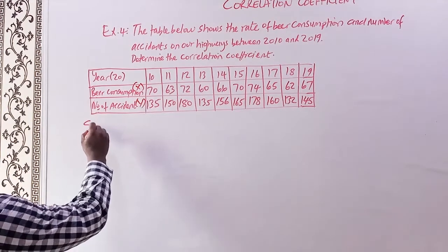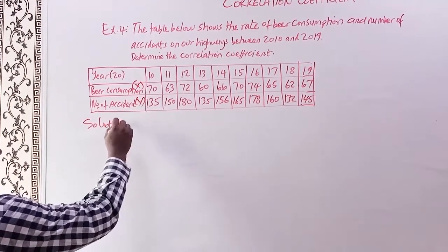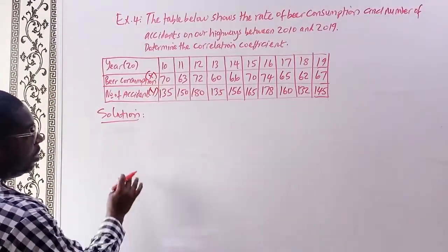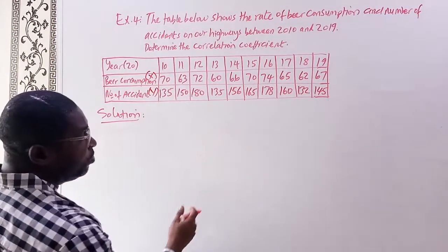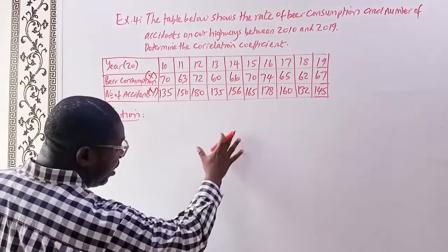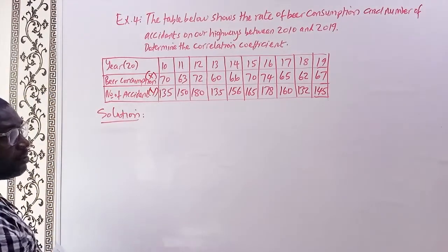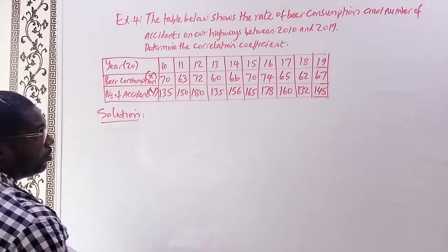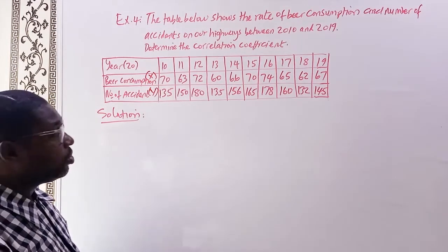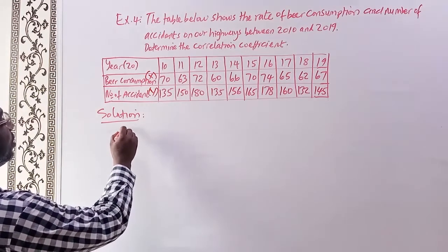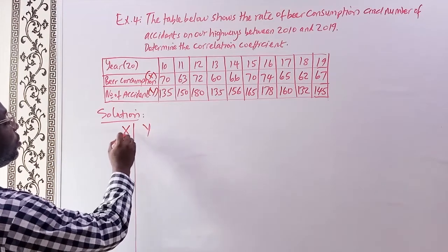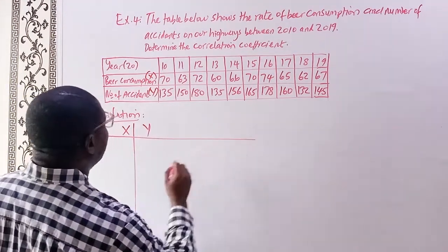Normally, what would we do? We have a solution here. We represent our X and Y in our table, and we generate a product of X and Y. We now have X squared and Y squared — that gives us five summation columns. With those five summations, we can solve for our correlation coefficient. Let's start. We have X here, and then we have Y, and we'll extend the table to accommodate the other columns.